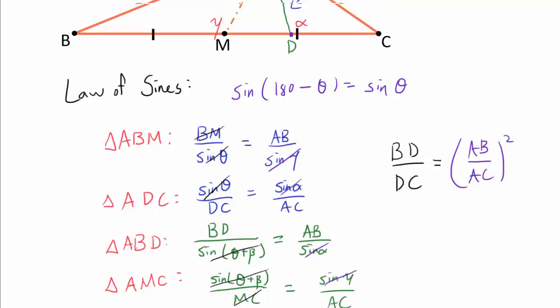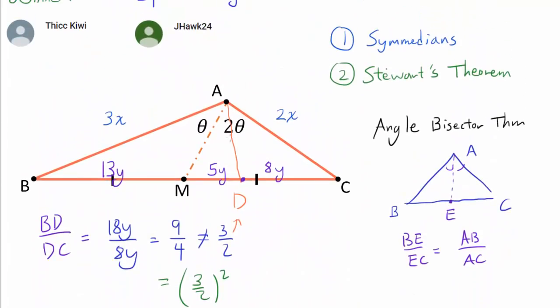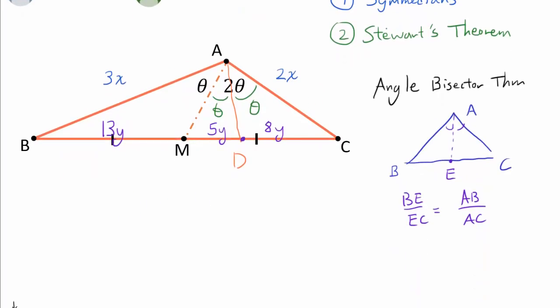But what does this theorem mean in the context of our problem? Well, that means because we got BD over DC being AB over AC squared, we know this angle is theta as well. But since we know this entire angle is two theta, we have this trisecting AM and AD. And from here, it's just applying the angle bisector theorem to triangle ABD to find AD in terms of X and Y. So let's begin with triangle ABD. So that's this triangle. In there, we see by the angle bisector theorem, AD over AB, which is 3X, is equal to MD over BM, or 5 over 13.